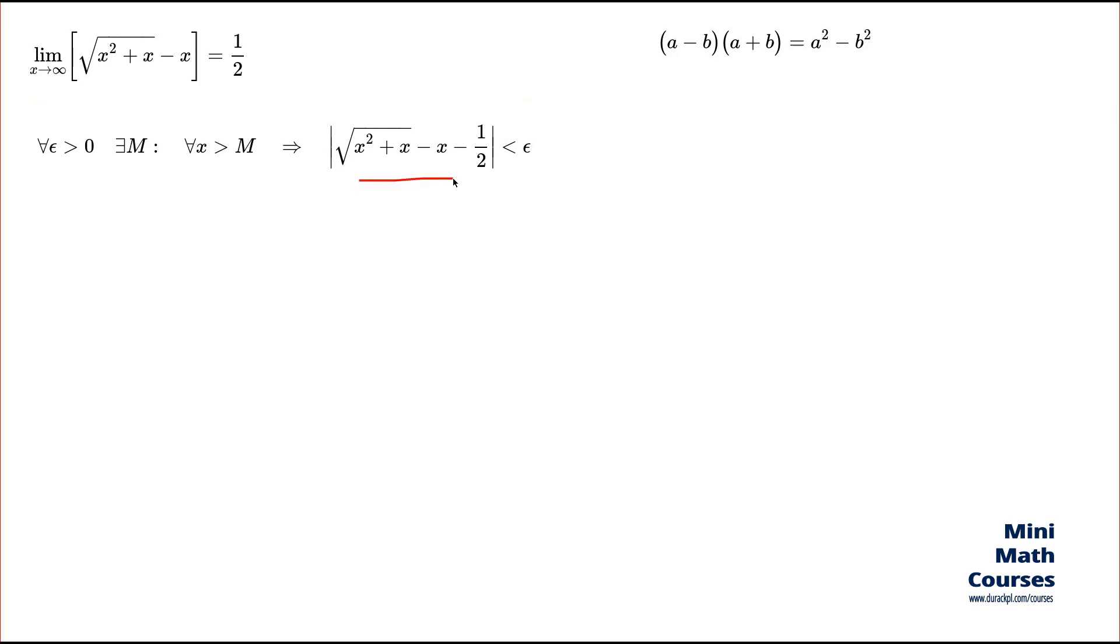The indispensable ingredient for this transformation will be this identity—the difference of squares. So have a look at what I'm going to do with this expression. Here's my expression. I dropped the absolute value, which is irrelevant at the current stage. I'm going to apply the difference of squares, treating the square root as the a value and x plus one-half as the b value. This difference—I combine x and a half together so you can see more explicitly that this is my a value and this is my b value. Now I introduce the second factor, a plus b.